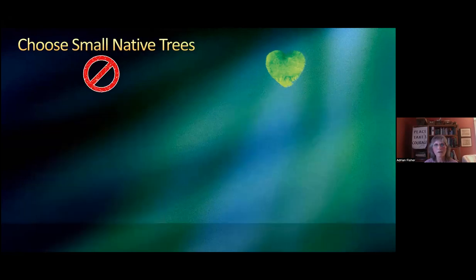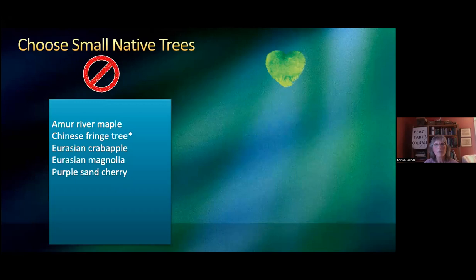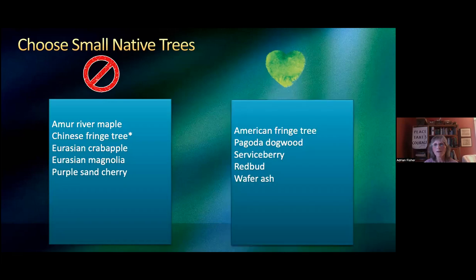Same thing with small native trees. The Chinese fringe tree is becoming invasive, but you've got an American fringe tree. You've got pagoda dogwoods, serviceberries, redbuds, wafer ash. It's really been great over the last 10 years to see how many serviceberries and redbuds in particular people are planting, because they're just gorgeous.